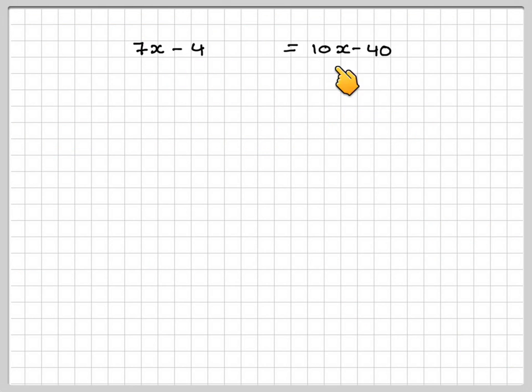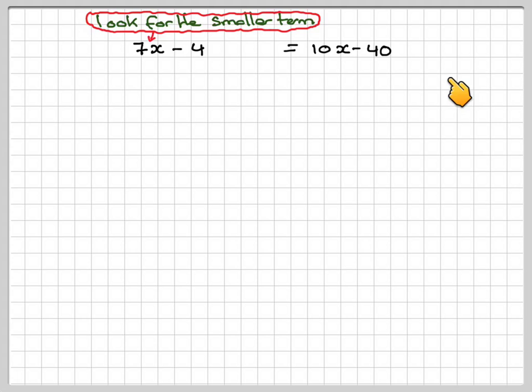The technique I use is to look at these two terms and see which one's the smallest. The smallest one is 7x, so I'm going to subtract 7x from both sides.